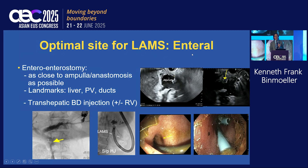For an enteral enterostomy, you use EUS to place your LAMS as close to the ampulla or the anastomosis as possible. Look for your landmarks — the liver, the portal vein, and the bile ducts. Sometimes I'll do a transhepatic bile duct injection. You can also add a rendezvous so that you are as close to the ducts as possible.